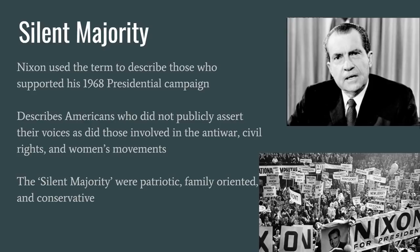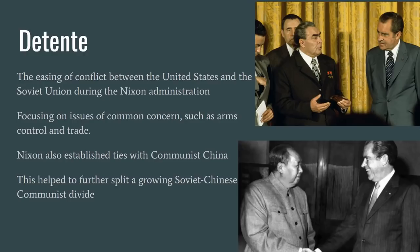Many wonder how Nixon won the 1968 election amid loud dissent over Vietnam, rights movements, and hippie counterculture. Nixon posed the idea of a silent majority of Americans who were not out protesting — patriotic, family-oriented, and conservative. The final foreign policy term for Period 8 is Nixon's policy of détente. While Vietnam ended in failure, Nixon saw incredible progress with the Soviet Union by easing tension and tackling common concerns like arms control and trade. Nixon even did what many thought impossible: engaging with and establishing ties with communist China, making a famous trip to meet with Chinese leaders Mao Zedong and Zhou Enlai. This also helped loosen the communist bloc as a growing divide developed between the Soviets and Chinese.